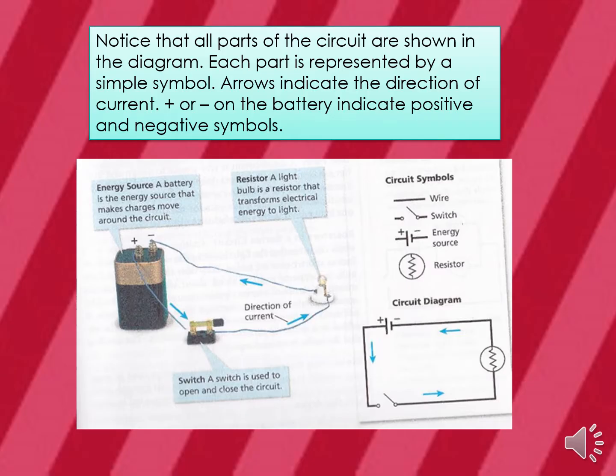All parts of the circuit are shown in a diagram, where each part is represented by a simple symbol. Arrows indicate the direction of current, and positive or negative symbols on the battery indicate polarity. In this example, the direction of current goes from the positive end of the battery, through the conducting wires, to the resistor — which is the light bulb — and back to the negative end of the battery.